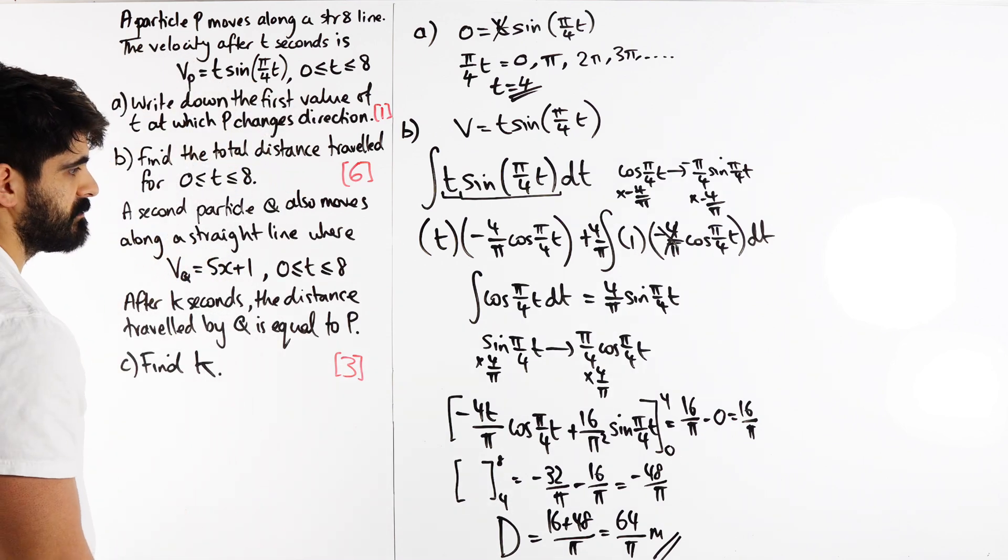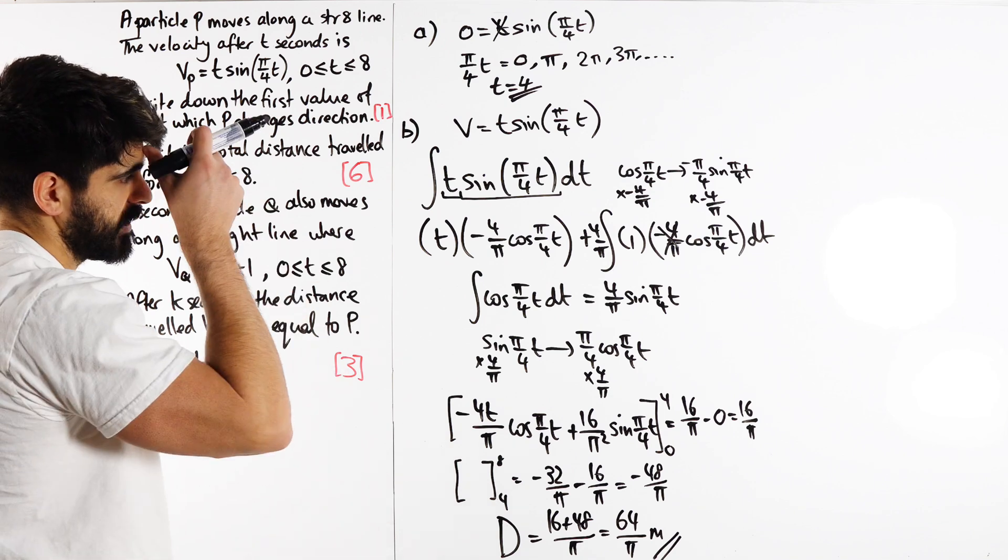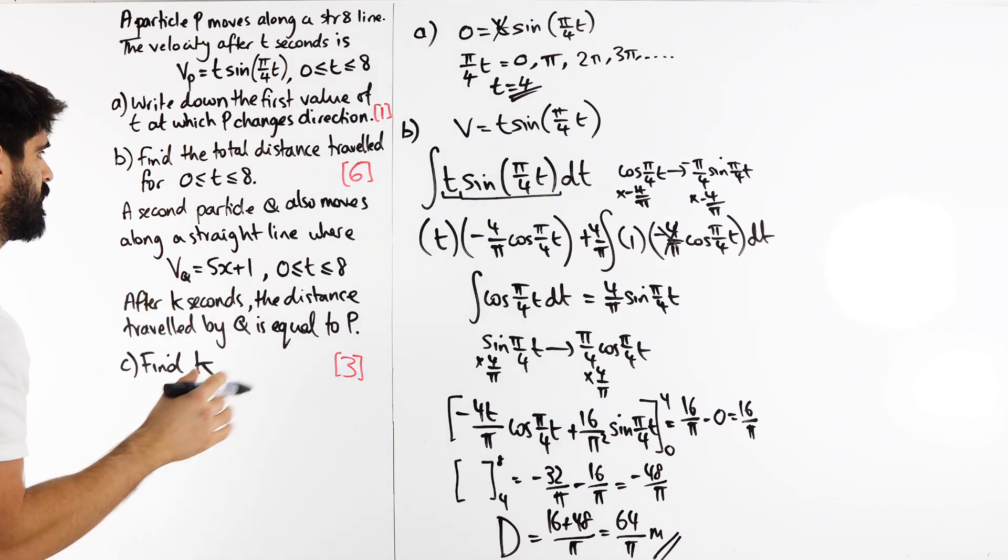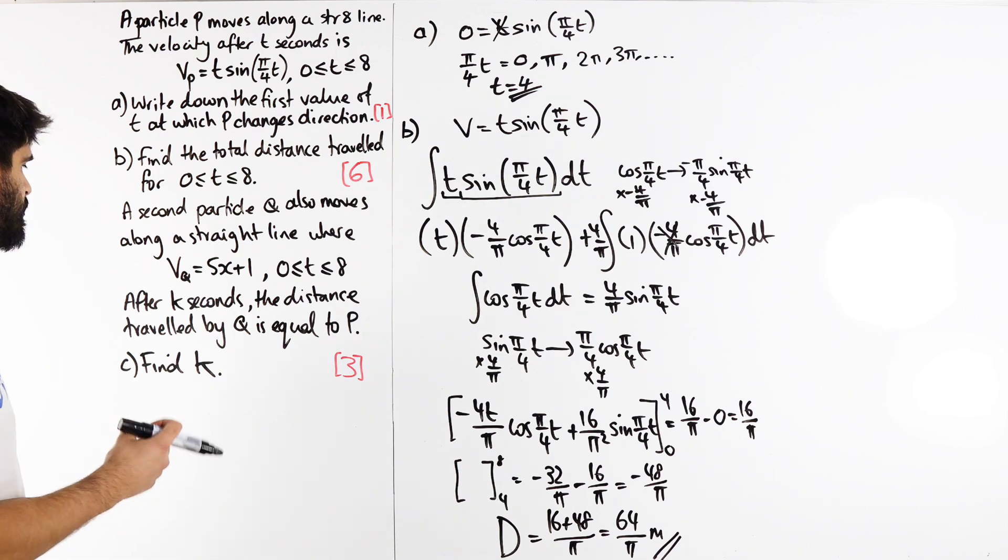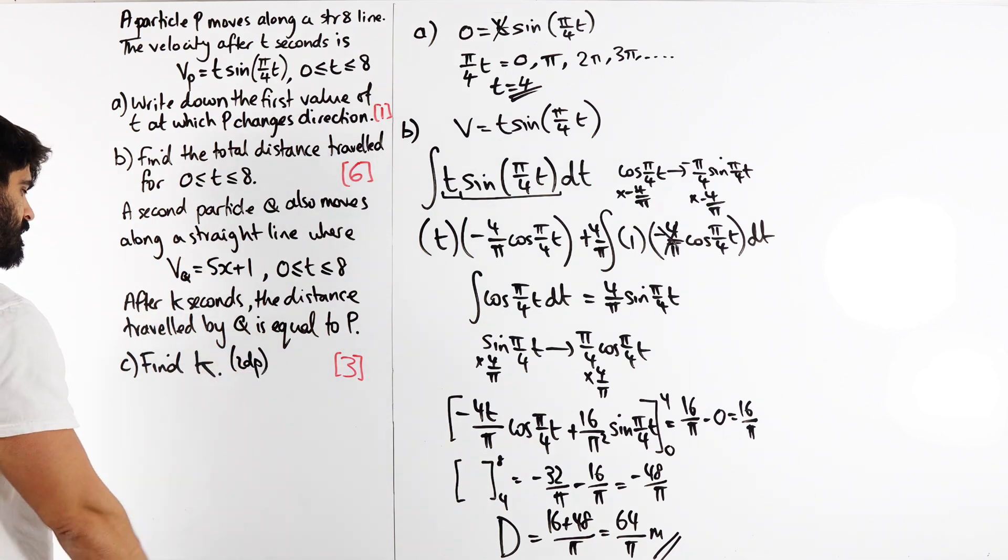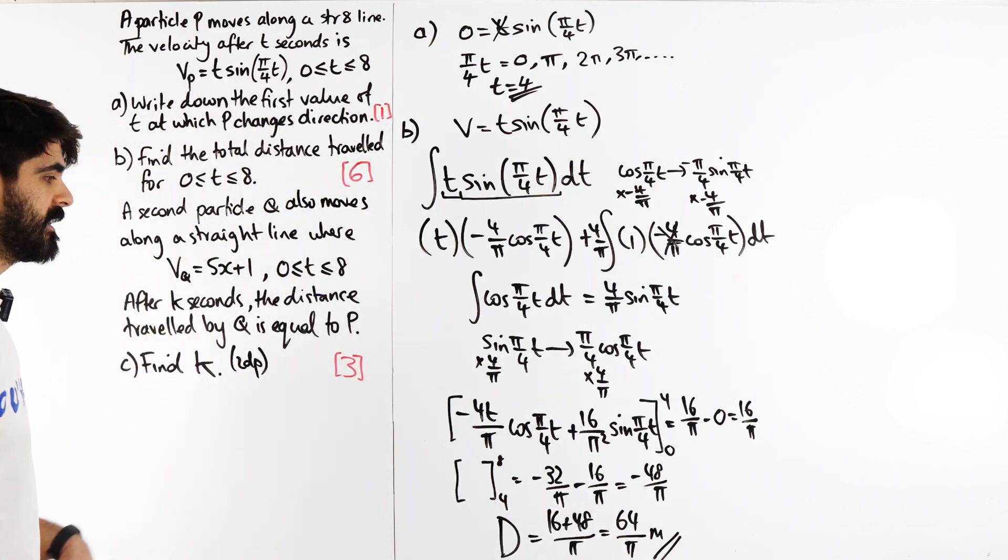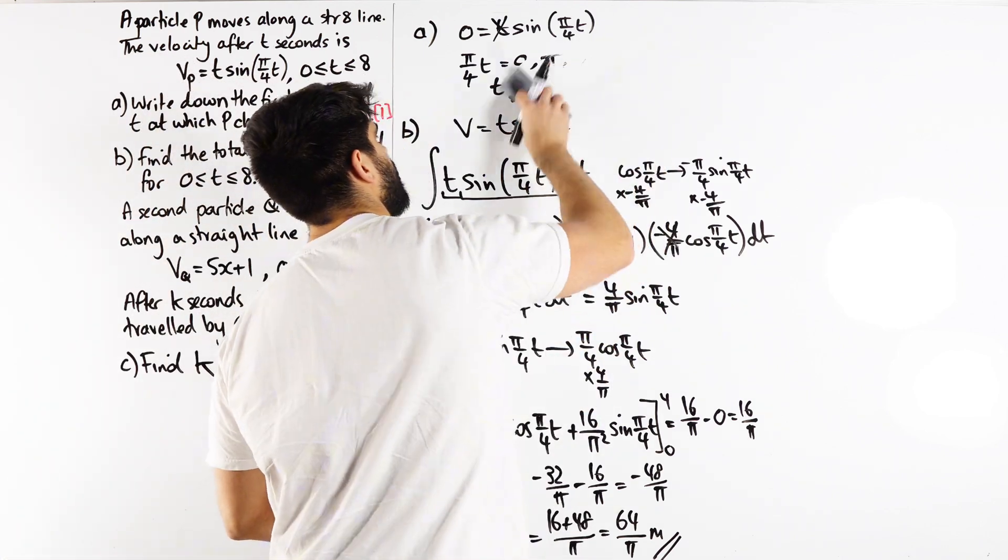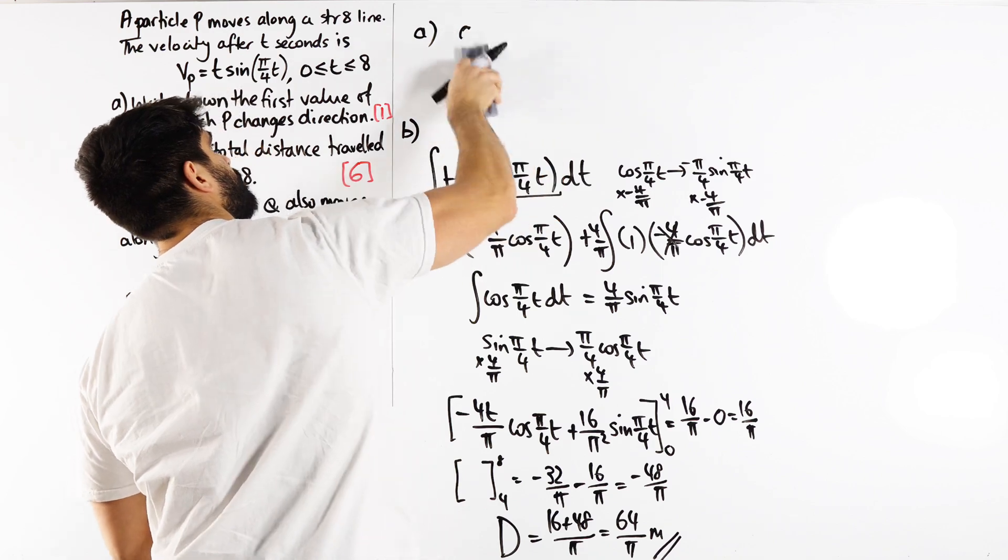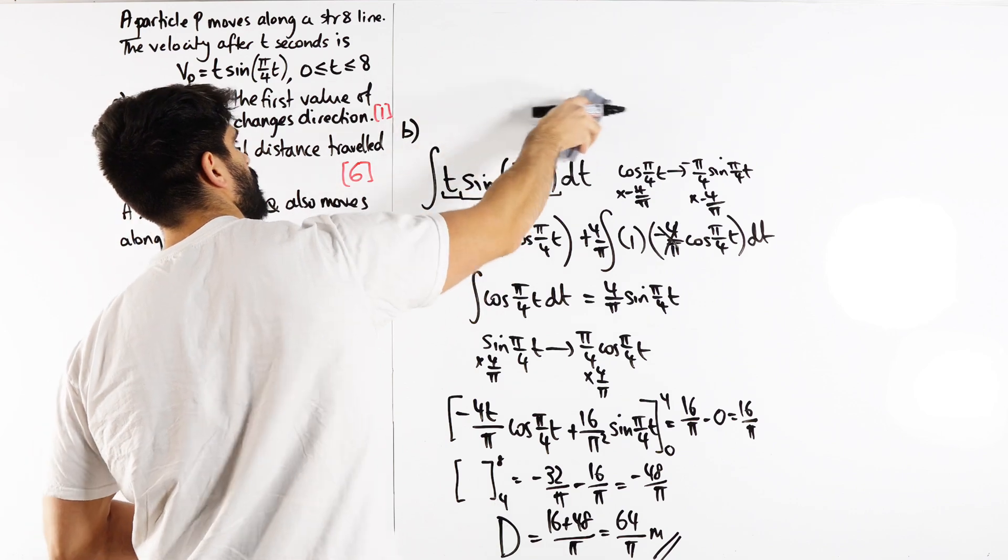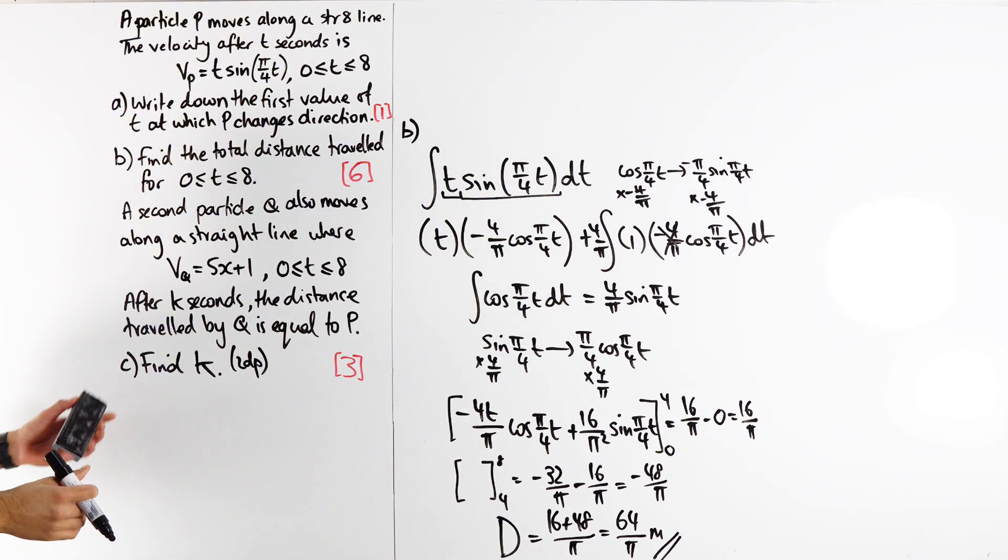A second particle Q moves along a straight line where the velocity is 5t plus 1. After k seconds, the distance travelled by Q equals P, find k. I want it to 2 decimal places. Because of this value and this being linear, it's not going to give us an exact answer. There's different ways you can look at this. I still recommend you do a sketch.